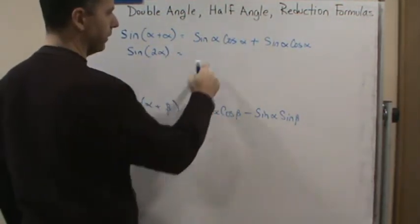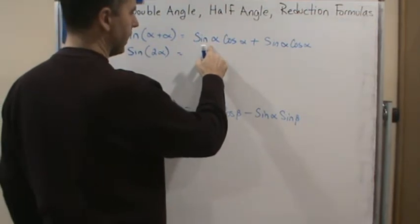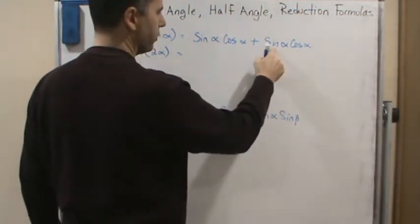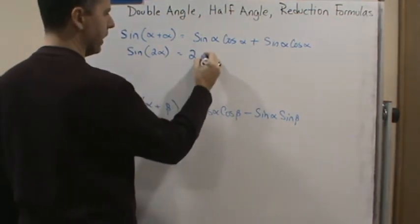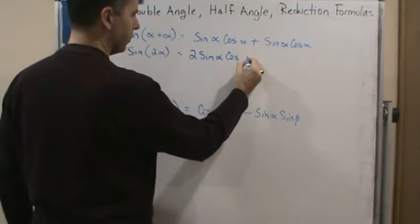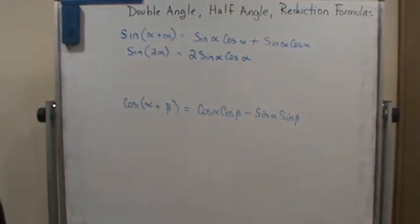Is equal to what? It's going to be cosine alpha sine alpha, and another sine alpha cosine alpha. So we get 2 times sine alpha cosine alpha. And there's the first formula.